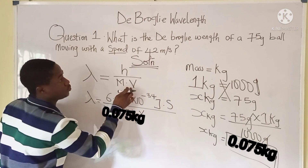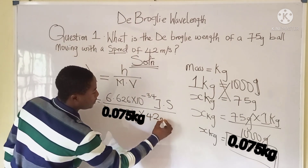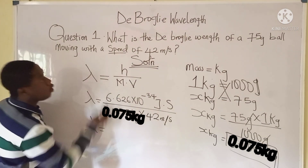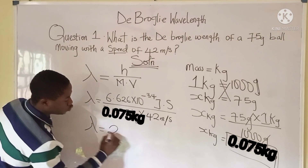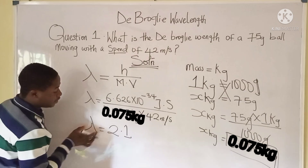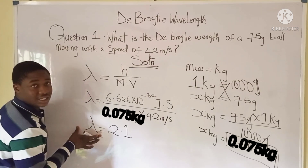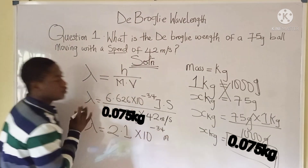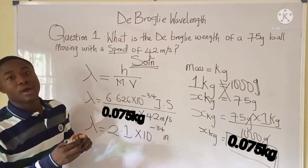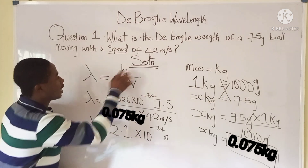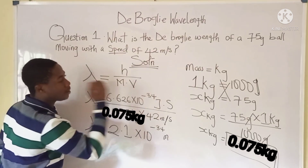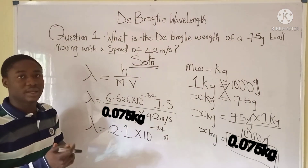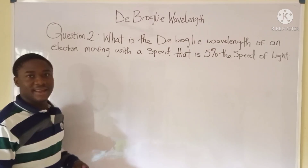Multiplying by the velocity, which is 42 meters per second, the de Broglie's wavelength comes out to 2.1 times 10 raised to the power of minus 34 meters. That is the answer to this question. Remember: de Broglie's wavelength is h divided by mass times velocity.